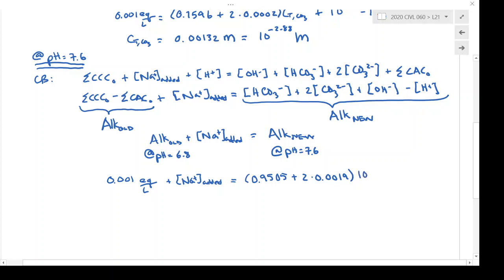And then for the CTCO3, I'm just going from one form of the alkalinity equation to another form. And one of my underlying assumptions in this problem is that the CTCO3 is constant. So this is a closed system. So when we go from pH 6.8 to 7.6, the CTCO3 doesn't change because it's a closed system. There's no addition or loss of carbonates.